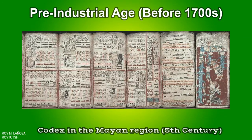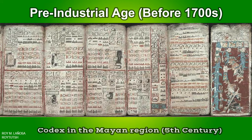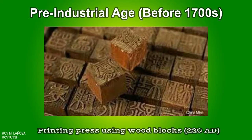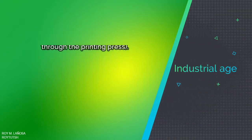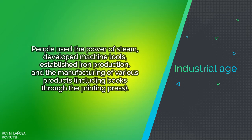Codices in the Mayan region are folding books written by the pre-Columbian Maya civilization in Maya hieroglyphic script on Mesoamerican bark paper. Woodblock printing is a technique for printing text, images, or patterns, used widely throughout East Asia and originating in China in antiquity as a method of printing on textiles and later paper. This brings us to the next phase: the Industrial Age.